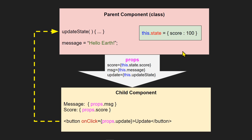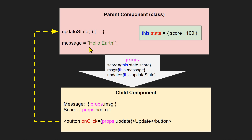Let's talk about a class component first. Up here I have a state set to a property called score with a value of 100. I also have a function called updateState to update the state value when changes are made in the child component, and a message to pass down to the child component.